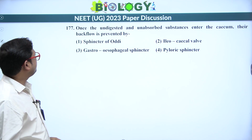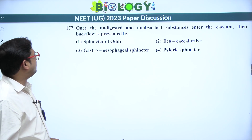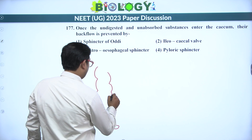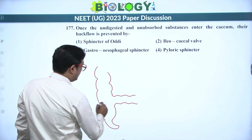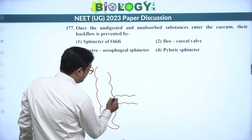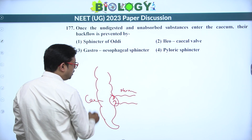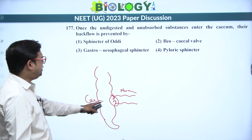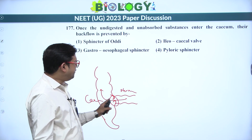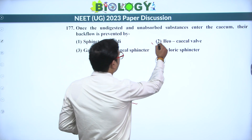Next: once undigested and unabsorbed substances enter the caecum, their backflow is prevented by what? The valve between the ileum and the caecum is the ileocaecal valve. This valve prevents backflow of undigested food material once it enters the large intestine. Answer is the second option.